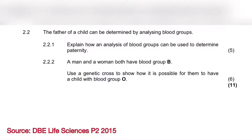For question 2.2.2, we have to use a genetic cross to show how two parents with blood group B can produce a child with blood group O. The first thing to consider is that the question doesn't tell you whether the parents are homozygous or heterozygous. With your knowledge, you need to know that blood group O is a recessive allele, and for a person to express a recessive trait they must be homozygous for it. Therefore, the parents must be heterozygous.